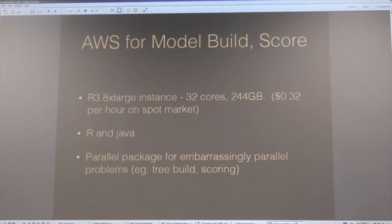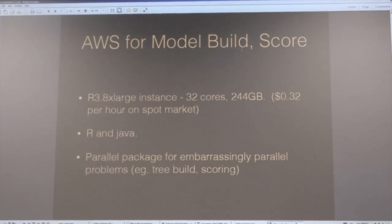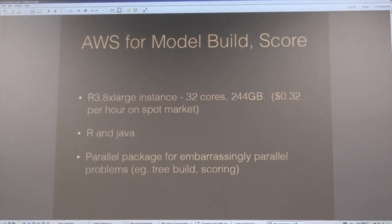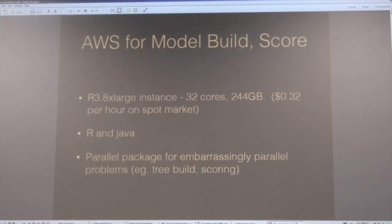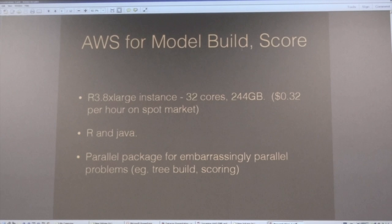That's the data preparation — lots of data scrunched down into a training and scoring set, maybe a summary set for loading into a data warehouse. For model building, you've heard a lot about R not being scalable, but one of the machines we use has 32 cores and 244 gigs of memory. You can get it for 30 cents an hour, and it will read S3 data. You can parallelize using foreach or the parallel package.